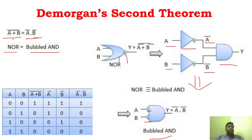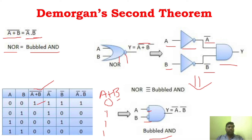You have to prove A + B whole bar is equal to Ā · B̄. First determine A + B: 0+0=0, 0+1=1, 1+0=1, 1+1=1. So A + B is 0, 1, 1, 1. Now take A + B whole bar (the complement): 0 becomes 1, 1 becomes 0, 1 becomes 0, 1 becomes 0. So A + B whole bar is 1, 0, 0, 0.